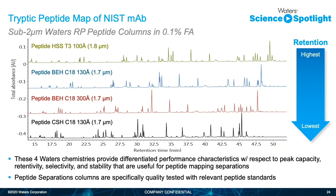Depicted here are the varying selectivities of each of the peptide particle chemistries — QC'd with a tryptically digested sample. Highlights include the increased retentivity by switching to the peptide HSST3, which has a 100 angstrom pore size, while the lowest retentivity is the peptide CSH at 130 angstrom. There are numerous selectivity differences between all four particles. The highest peak capacity for some peptides is provided by the peptide CSH. Comparable average peak capacities for the HSST3 and the BEH in both pore sizes are comparable. The peptide HSST3 is the best choice for small polar peptides because of its great retentivity.